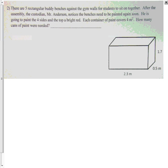Question two says there are five rectangular buddy benches against the gym wall. We have to paint these buddy benches, but we're not going to paint the bottom. There's only five sides that need to be painted: four sides and the top.